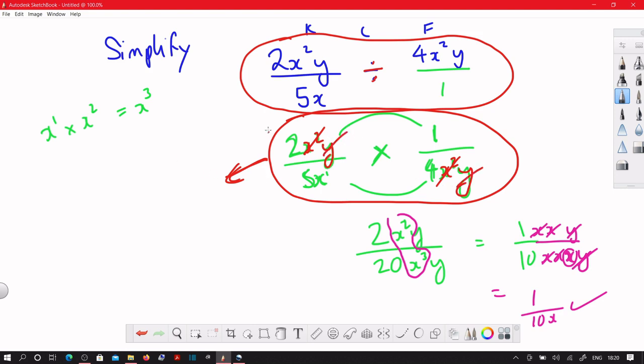So what am I left with? I'm left with 2 times 1, which is just 2. Everything else has been cancelled. And on the bottom we've got 5 times 4, which is 20.